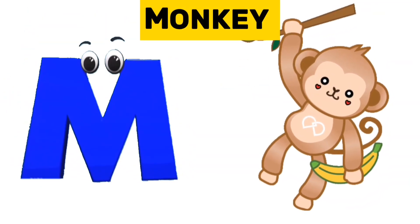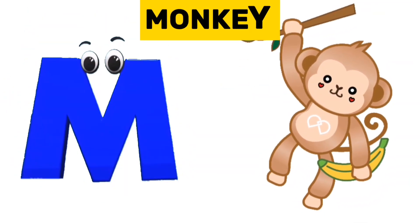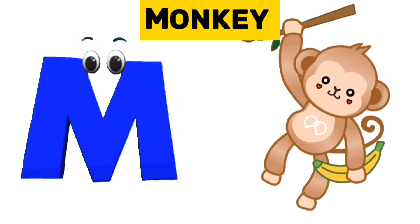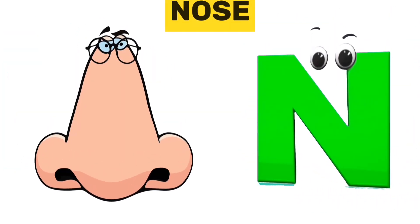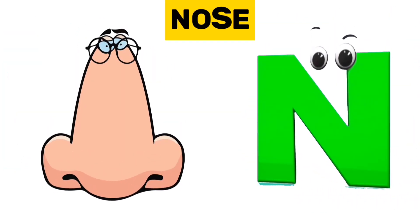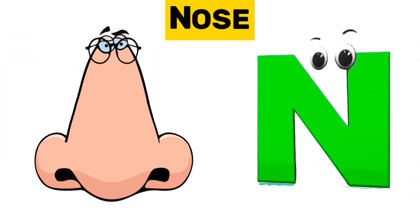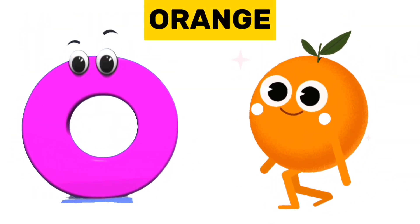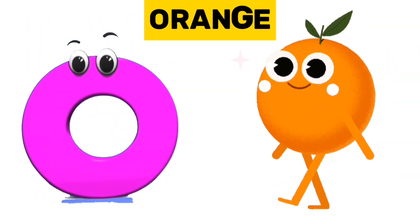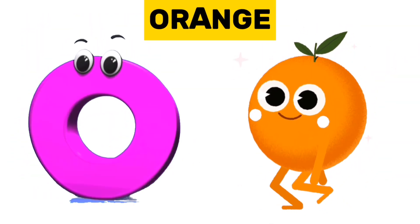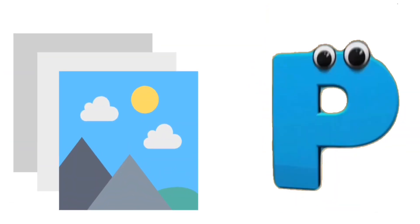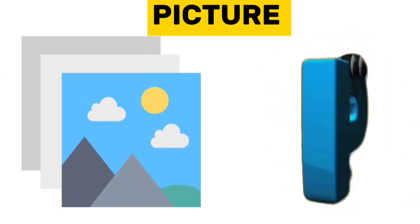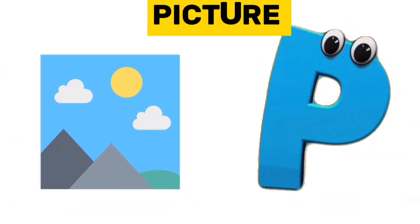M is for monkey. M, m, monkey. N is for nose. N, n, nose. O is for orange. O, o, orange. P is for picture. P, p, picture.